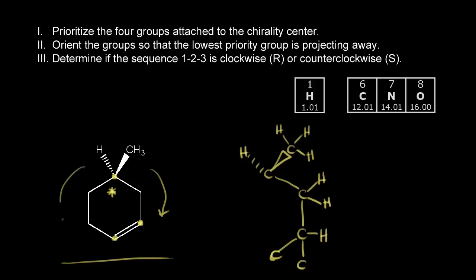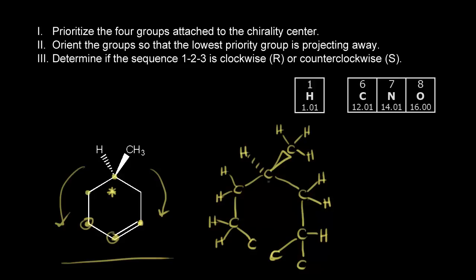Going this way around the ring, we hit a CH2, then another CH2, and then this carbon is bonded back to our chiral center. Now let's think about priority. This is our chiral center, so let's look at the four groups attached to it. This is Step 1: prioritize the four groups using atomic number.